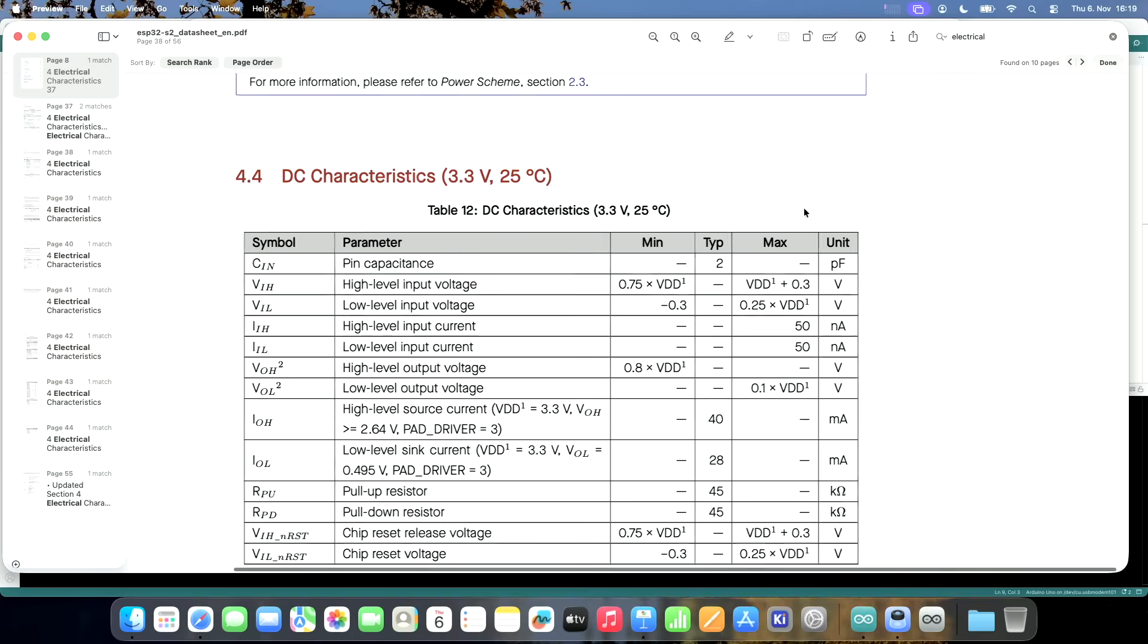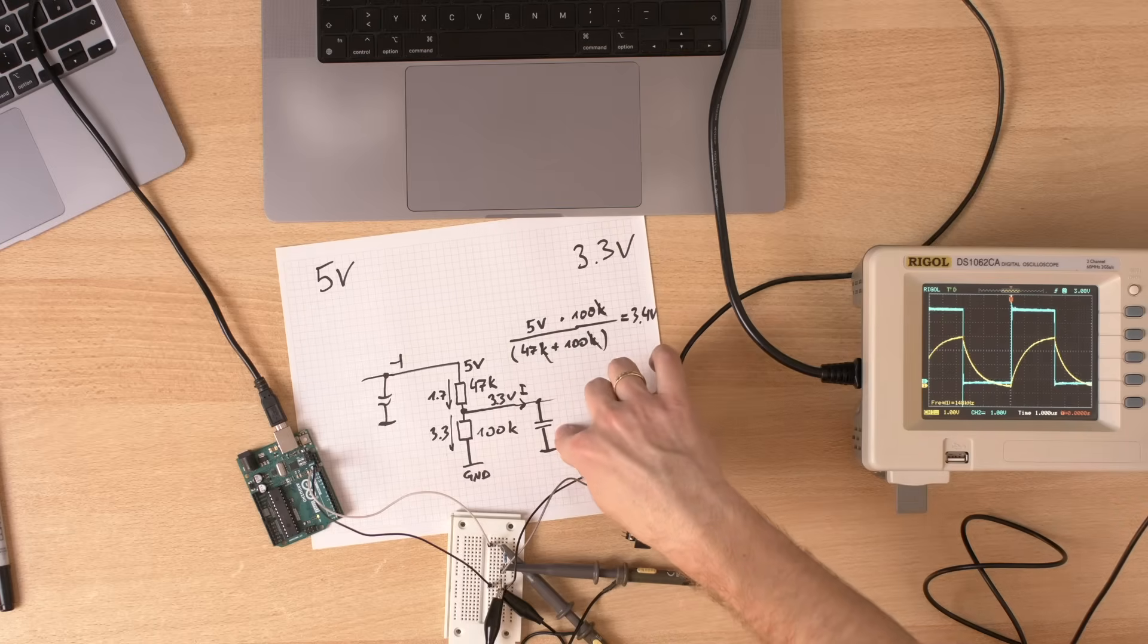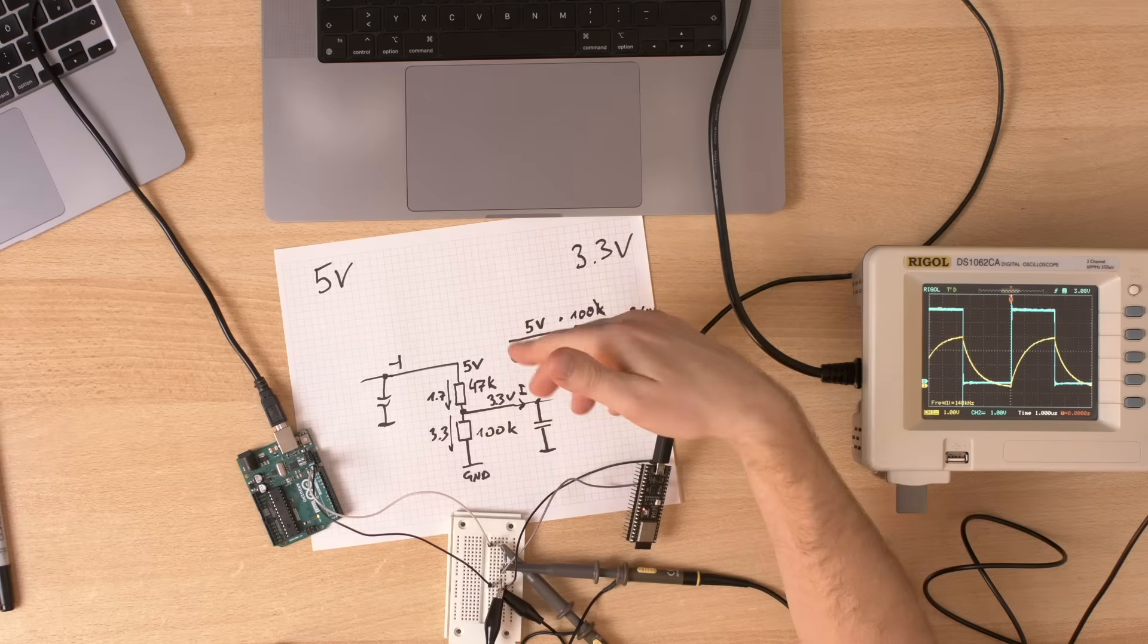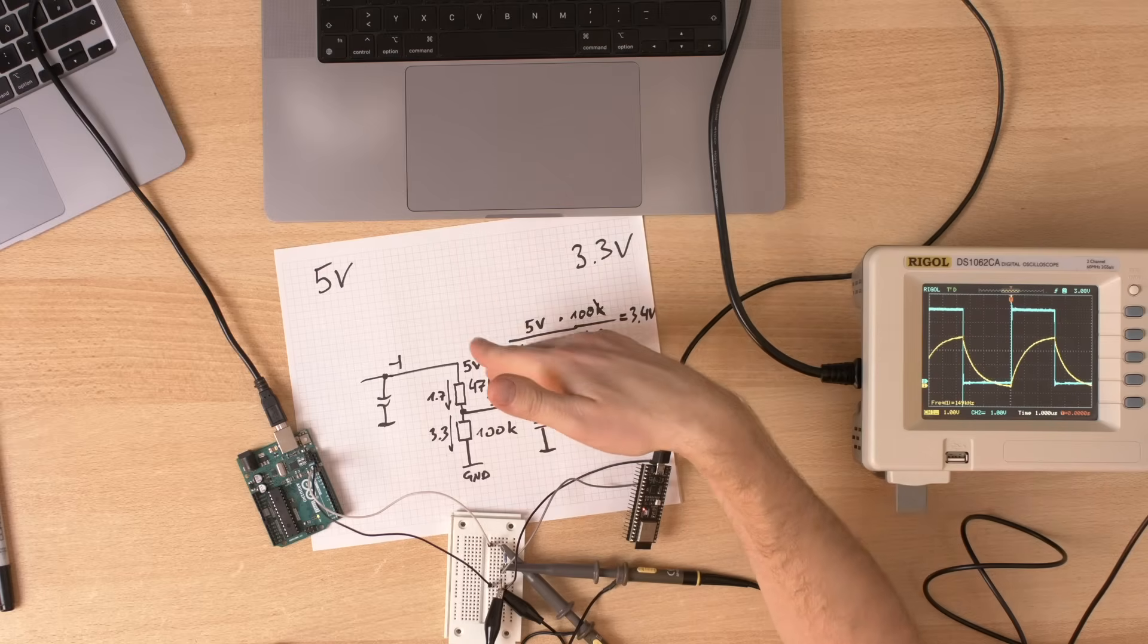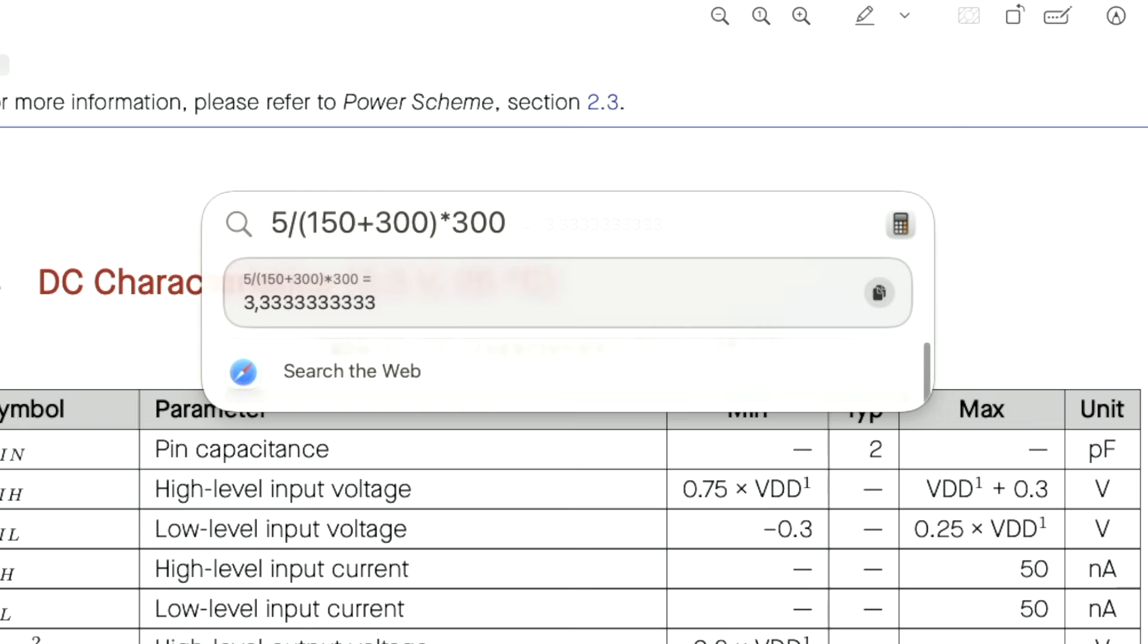If we look into the datasheet, we see a pin capacitance of two picofarads. So this is our tiny capacitor here that we cannot change. It is inside of the chip and it is being charged by this very high resistance value here. All right. So how can we fix it? We can pick different values. Let's pick a smaller value. Yes. I will use this combination here.